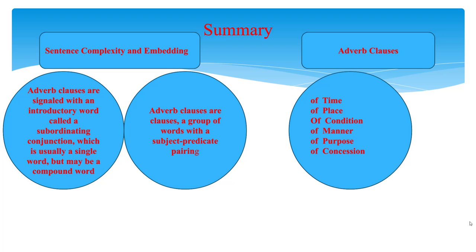Until/till: 'We waited until he finished his homework.' Until and till express 'up to that time.' We use either the simple present or simple past with until and till. Till is usually only used in spoken English. Since: 'I have played tennis since I was a young boy.' Since means 'from that time.' We use the present perfect or present perfect continuous with since. Since can also be used with a specific point in time.